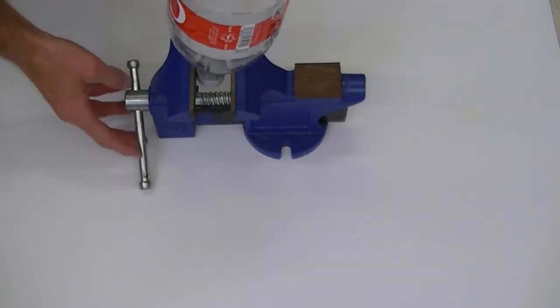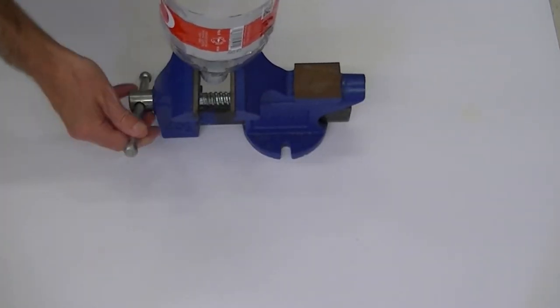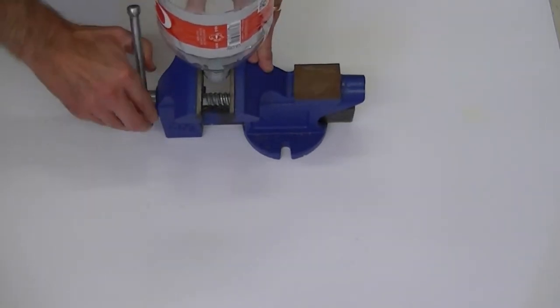First, secure the bottle to the vise as shown. I like to clamp the vise down onto the bottle top with the lid on.